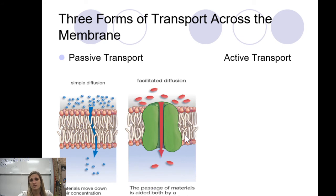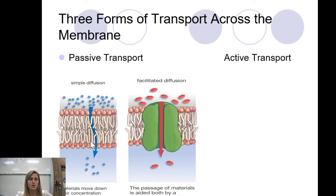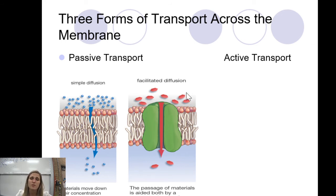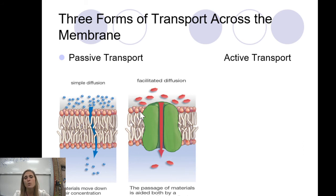Then there's facilitated diffusion. This requires the passage of materials aided by that high-to-low concentration, but also needs a transport or carrier protein. Water and small molecules can pass through the membrane directly, but something larger like glucose — the sugar you need as a main energy source — can't just come through on its own. It needs help through protein channels or carrier proteins. That's another type of passive transport: no energy required. The carrier protein recognizes the glucose, changes shape, and allows it through.